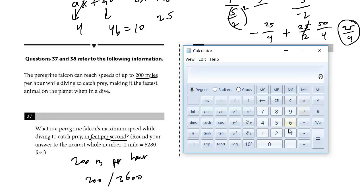So 200 divided by 3,600. I'm just going to type it. So we get 0.05555. So remember, this is going to be miles per second. Miles per second.